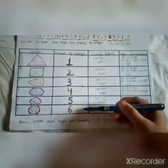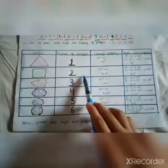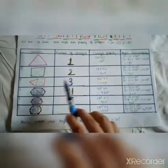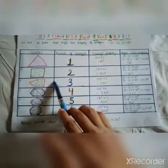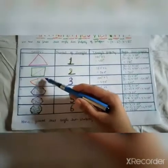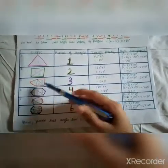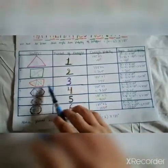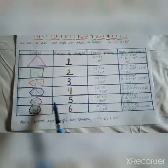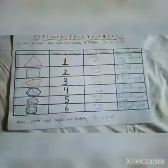The number of triangles in each polygon are: 1 in the case of a triangle, 2 in the case of a square, and 3 in the case of a pentagon. What we have done is divide the pentagon into 3 triangles using its diagonals. So 3 triangles in a pentagon, 4 in a hexagon, 5 in a septagon, and 6 in an octagon.